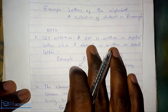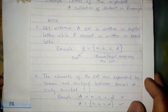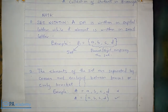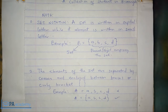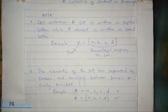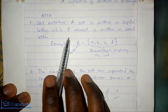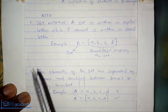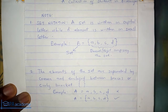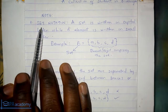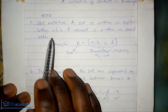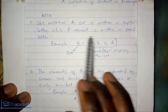There are some basic things we have to know when talking about sets. The first is set notation, which talks about how we represent sets — how we put it down in writing. A set is written in capital letter while its elements are written in small letters.